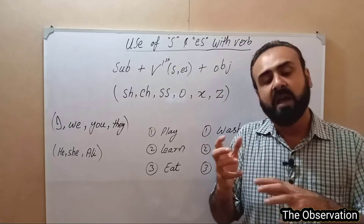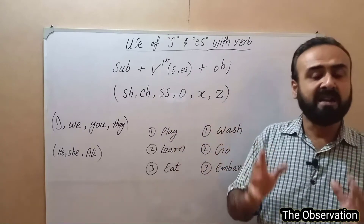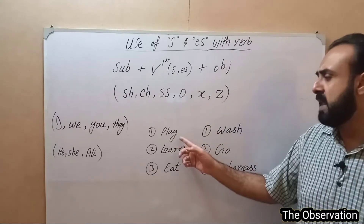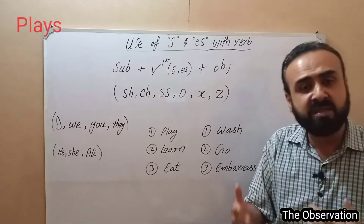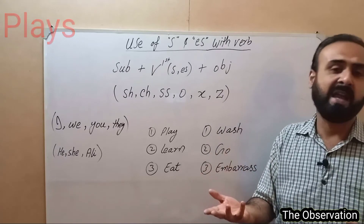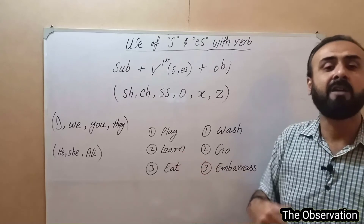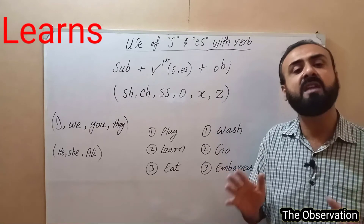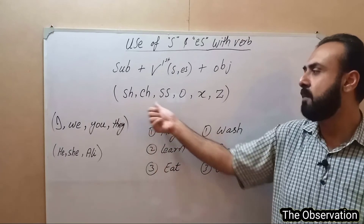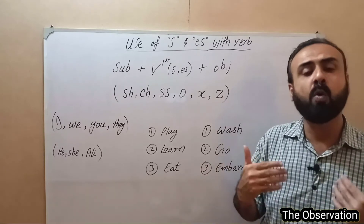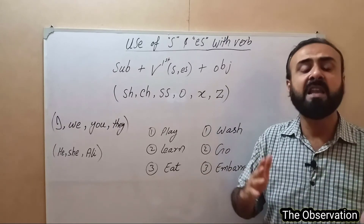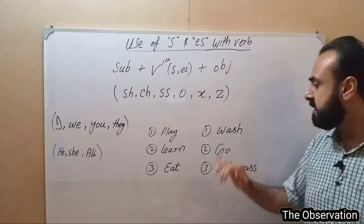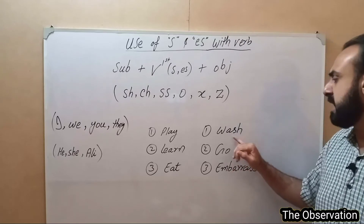If there is a verb that does not end with those specific endings, then only S is added. For example, the verb 'play' — it does not end with those special endings, so we say he plays cricket, only S is added. Similarly, 'learn' means to learn — she learns English, again only S is added. And 'eat' — Ali eats pizza — only S is added to eat as well.